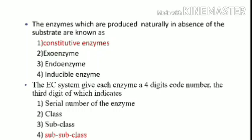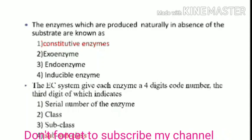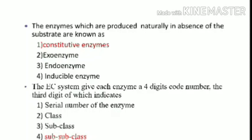The EC system gives each enzyme a four-digit code number. The four digits indicate: first is the class, second is the subclass, third is the sub-subclass, and fourth is the serial number. So the third digit indicates the sub-subclass — the fourth option is correct.